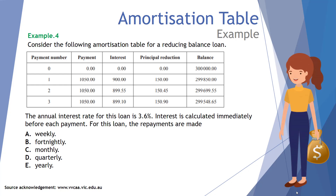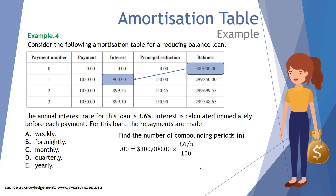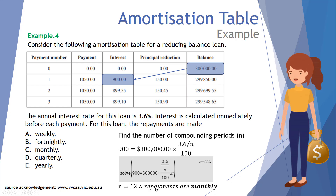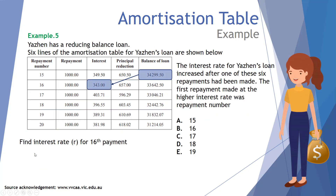Example four: an amortization table for a reducing balance loan shows an annual interest rate of 3.6 percent, with interest calculated immediately before each payment. The options for repayment frequency are weekly, fortnightly, monthly, quarterly, or yearly. Examining payment one: the balance is three hundred thousand dollars with interest of nine hundred dollars. Setting up the equation — 900 equals 300,000 multiplied by 3.6 divided by N, over 100 — and solving for N gives 12. When N equals 12, we have monthly repayments.